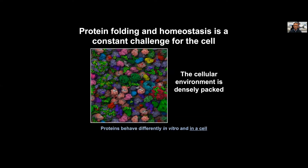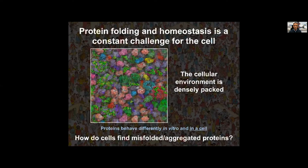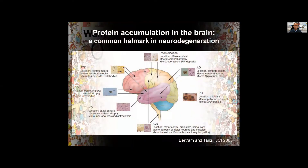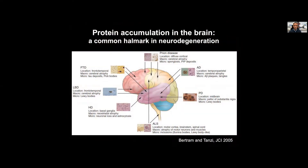It's important to keep in mind that what we find in vitro is perhaps a bit different than what we find in vivo or in the context of a cell. We need to understand how cells find misfolded and aggregated proteins. Imagine a crowded environment like the ones we know from textbooks — cells need to identify the misfolded proteins. When this doesn't happen efficiently, it can lead to problems associated with a variety of human diseases from diabetes to cancer to neurodegeneration.